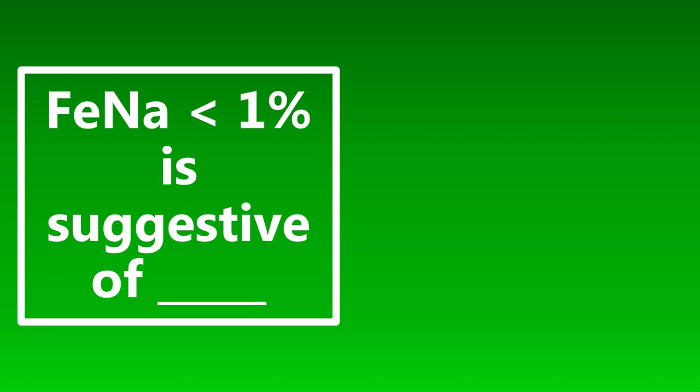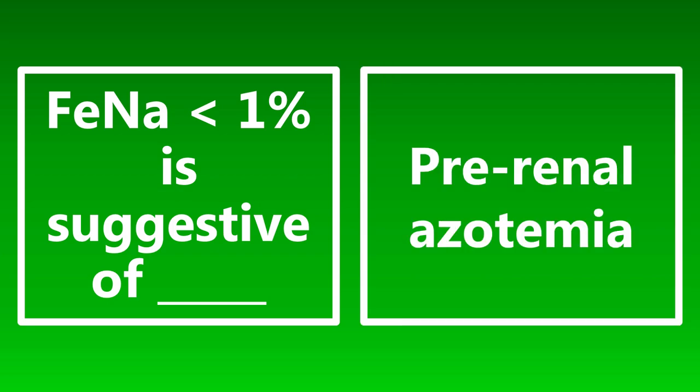A fractional excretion of sodium of less than 1% is suggestive of what? Fractional excretion of sodium less than 1% is suggestive of pre-renal azotemia. Remember, this measures the amount of salt leaving the body through urine compared to the amount filtered and reabsorbed. A low fractional excretion means low excretion — one reason being hypoperfusion. Less than 1% is suggestive of pre-renal azotemia.